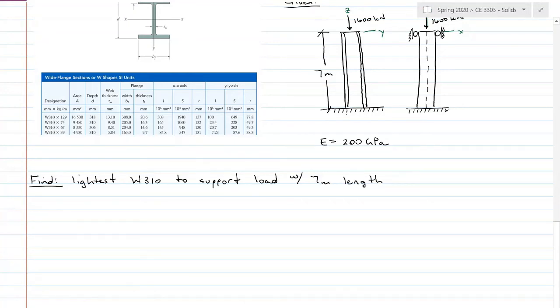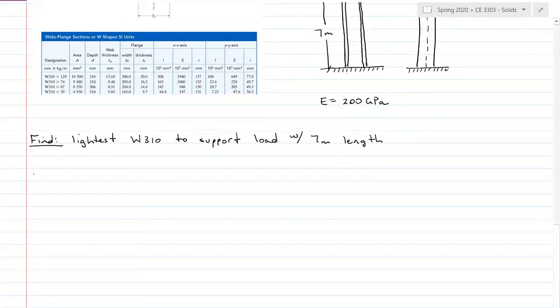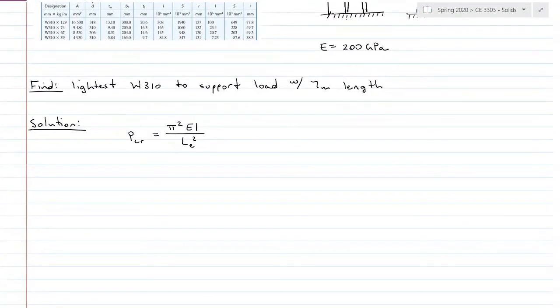I want to find the lightest, that's the second number here, W310 to support the load with that seven-meter length. So I have P critical, I have E, and what I'm looking for is I in this case. So solution, P critical is equal to π² EI over L_E². Fun thing is, in one direction I've got fixed-free, the other direction I have fixed-pinned. So we're going to have to do twice the work.